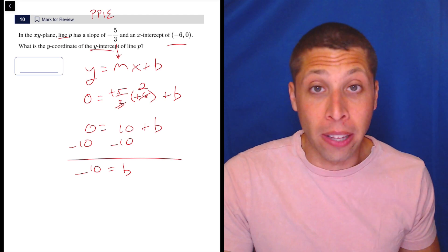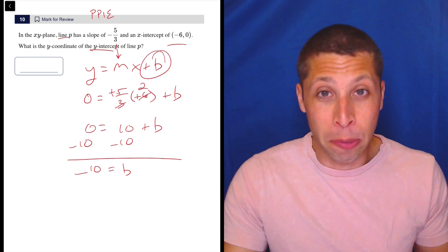And what do they want? They want the y-intercept of the line. So the b in y equals mx plus b is the y-intercept.